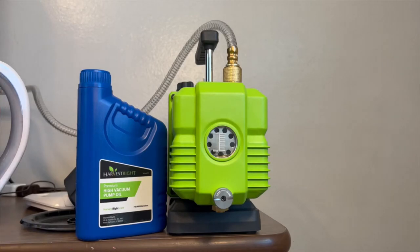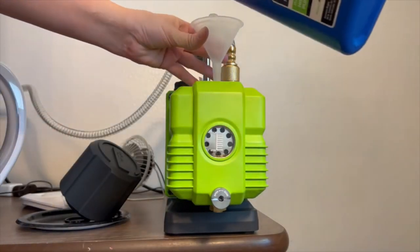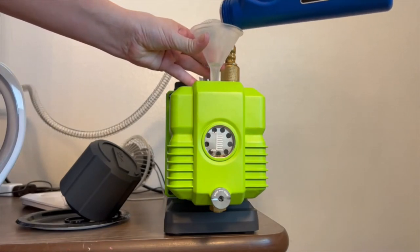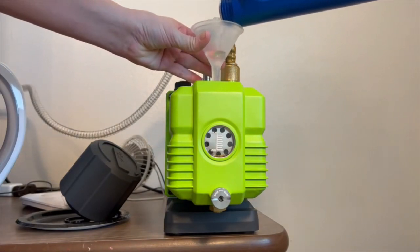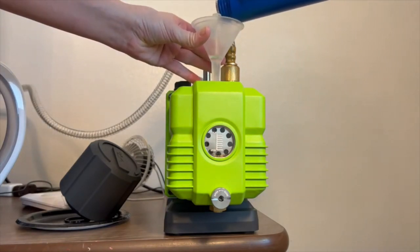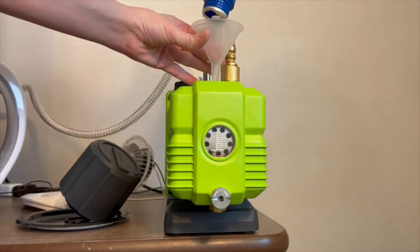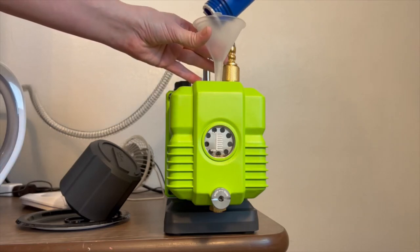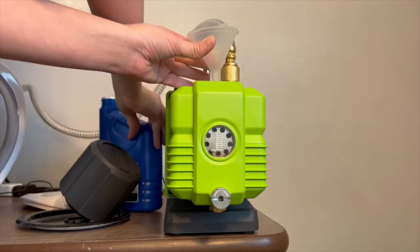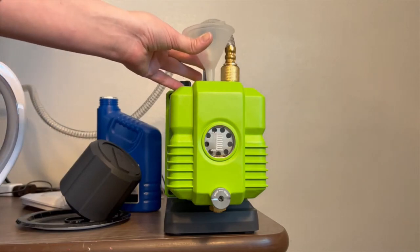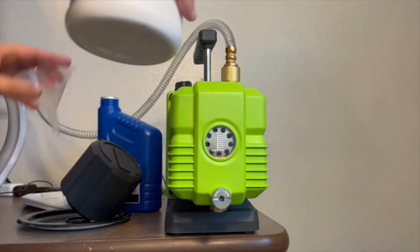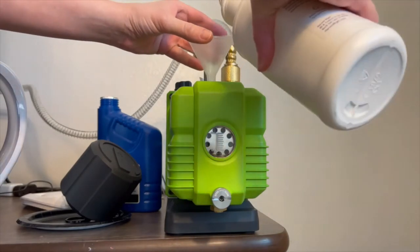I'm going to use a funnel just to help make sure I don't make a mess. I made a mess the last time I filled up my machine. So that oil is now empty, and then I will be adding from the other oil. I got my new oil opened here that hadn't been opened before.